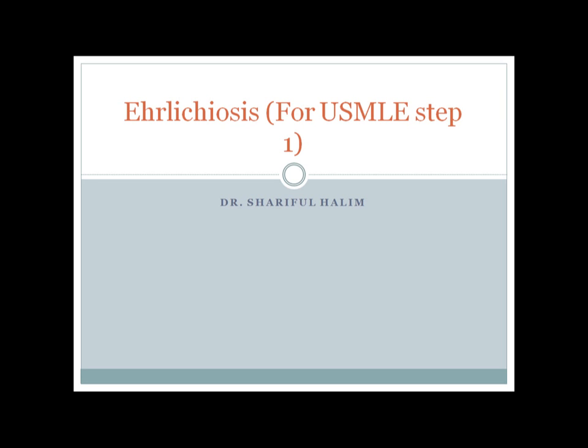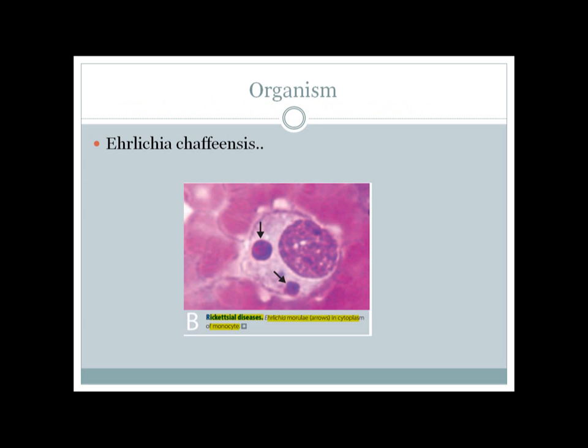This video discusses the important concepts of Ehrlichiosis. The organism that causes Ehrlichiosis is called Ehrlichia chaffeensis, and it's one of the rickettsial organisms. You can divide rickettsial organisms on the basis of rash — some rickettsial diseases are very commonly associated with rash.